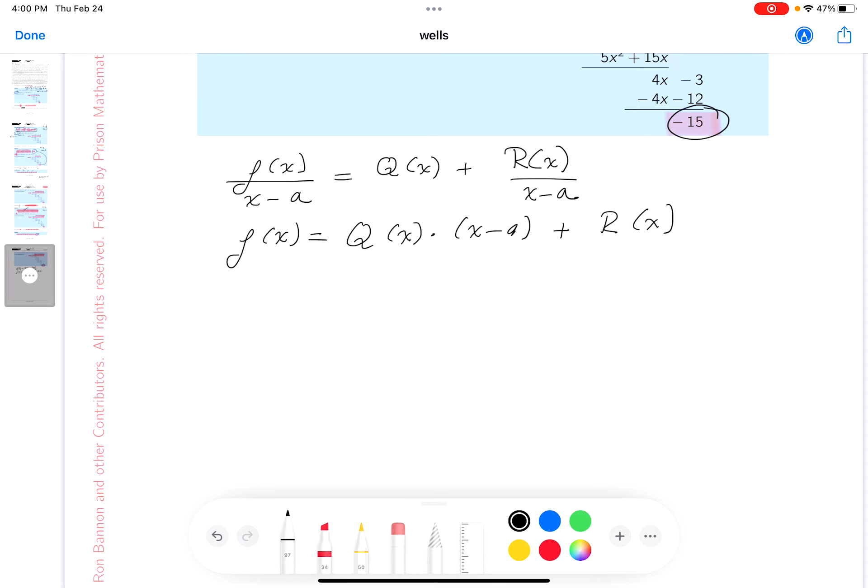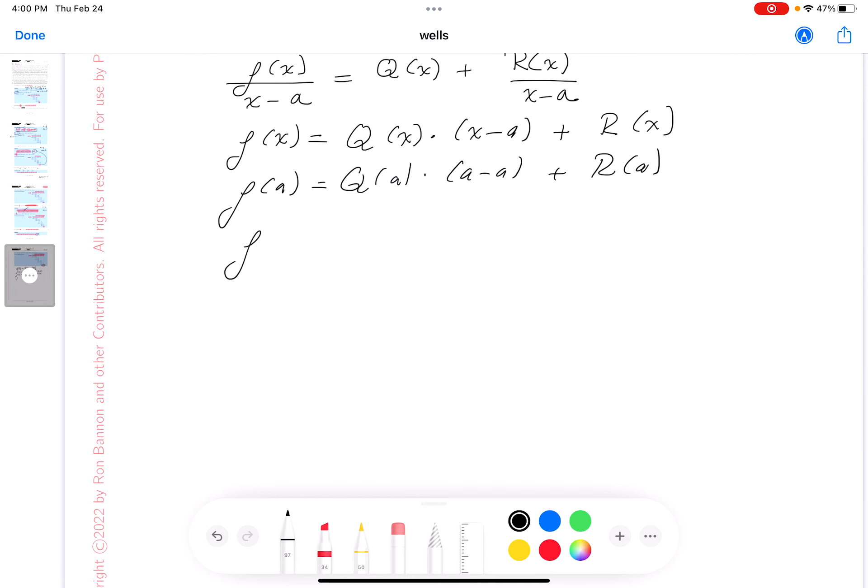If I write down f(a), what do you get? Q(a) times (a-a) plus R(a). So what is f(a) equal to? The remainder.